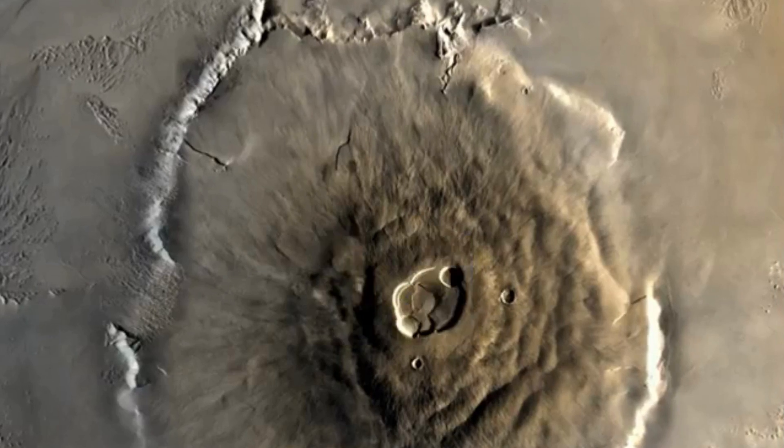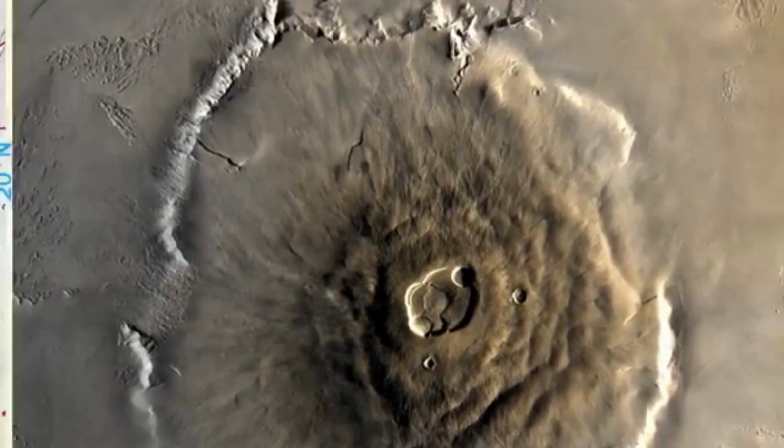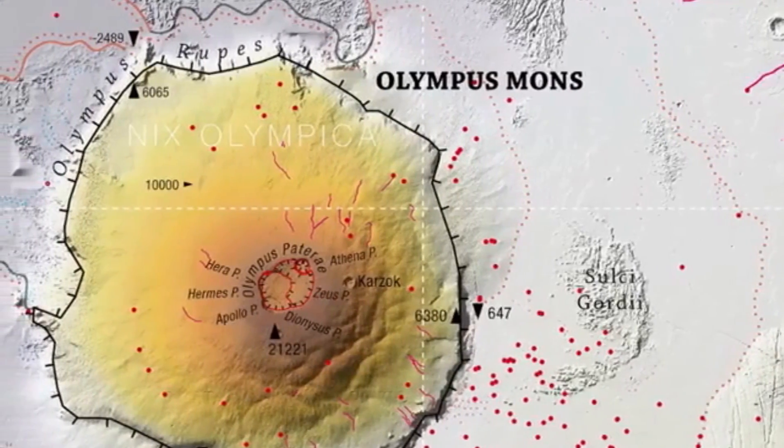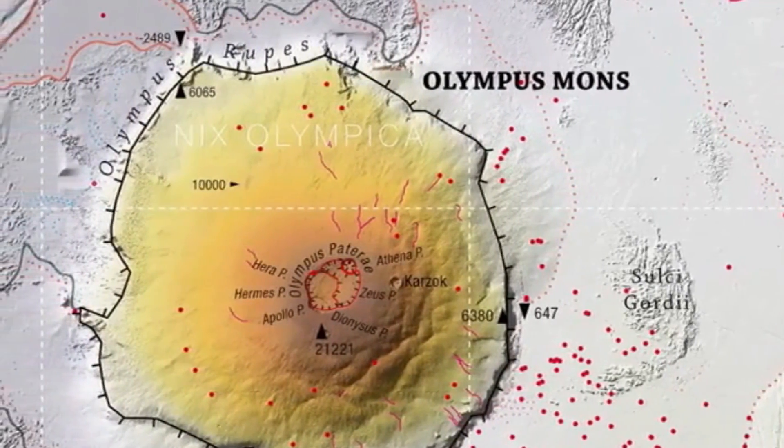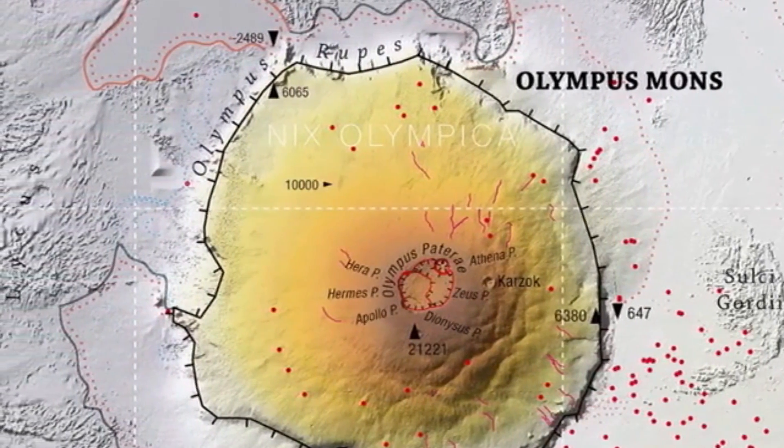12. The largest volcano in the solar system is Olympus Mons on Mars. It is about 13.6 miles, 22 kilometers high, nearly three times the height of Mount Everest.